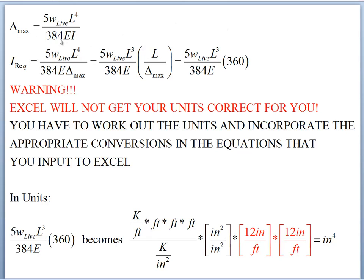We want to think like designers, so we're going to set a limit on delta_max. We'll have a certain live load set by code, a certain span determined by the building layout, and we'll choose a material that carries a certain material stiffness E. As designers, the thing we control is the cross-sectional property — the moment of inertia I.